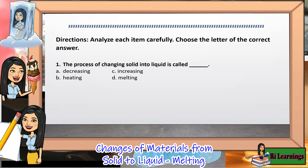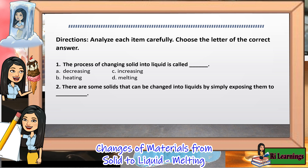Number 2: There are some solids that can be changed into liquids by simply exposing them to blank. A. Cold air. B. Moonlight. C. Sunlight. D. Moisture.